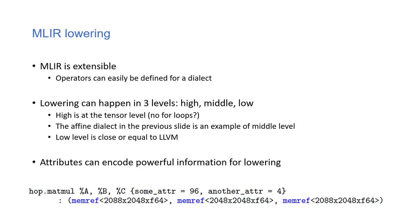MLIR stands for Multi-Level Intermediate Representation. It is designed to be extensible, and one of its advantages is that you can define dialects with custom operations. By using MLIR, you save a lot of the common work required in intermediate representations. The author notes that the lowering between levels can be categorized as high, middle, and low.